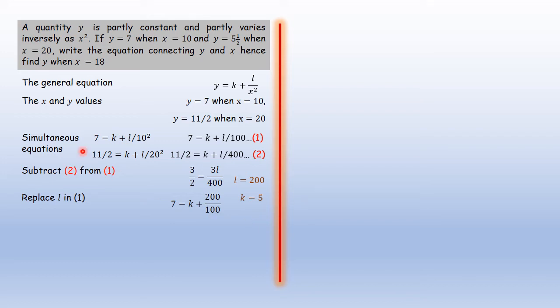We were told to write the general equation connecting y and x. That general equation will have this equation we wrote here, only that we're going to replace k and l with the values we've obtained: 200 for l and 5 for k. This is the general equation that we need.